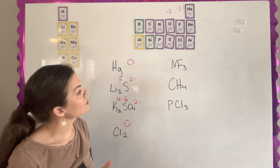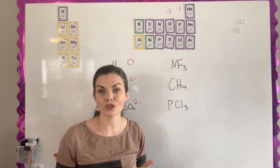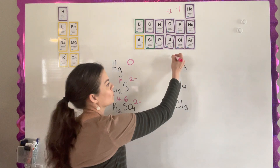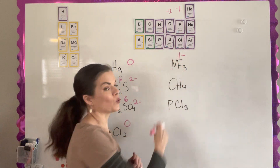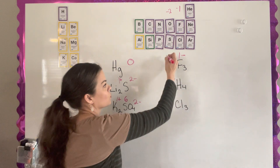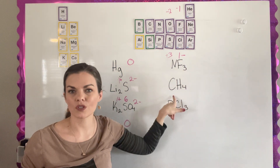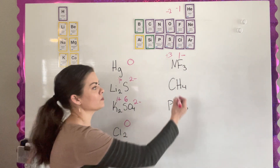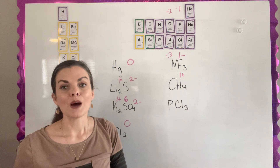For NF3, both nitrogen and fluorine are non-metals, so it's a covalent compound. There's no rule for nitrogen in a covalent compound, but there is a rule for fluorine: fluorine is always negative one. If fluorine is negative one and there are three of them, that's a total of negative three, so the nitrogen must be positive three. For CH4, there's no rule for carbon, but hydrogen is always plus one. Four hydrogens gives plus four, so carbon must be negative four.